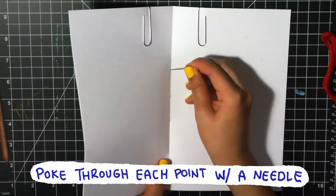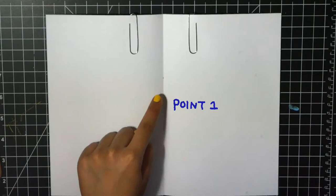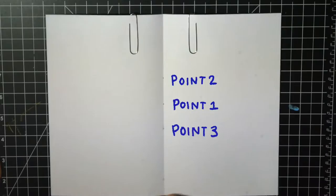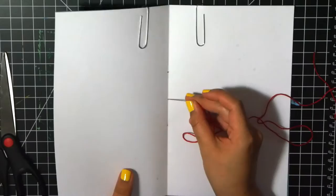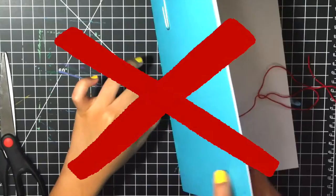Make sure you remember your points as they're shown here with the middle one being point one, the top one being point two, and the bottom one being point three. Make sure your thread is thin and not thick like how it is seen here because this is what will happen. This is the kind of thread you're going to want to use.